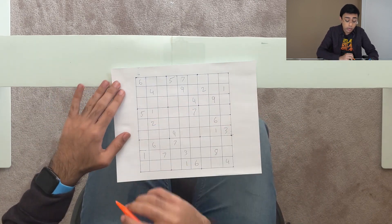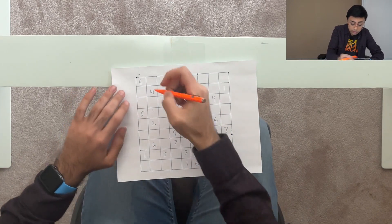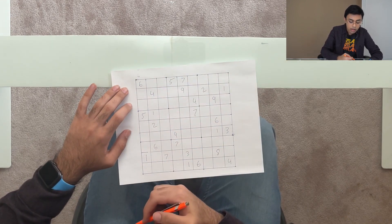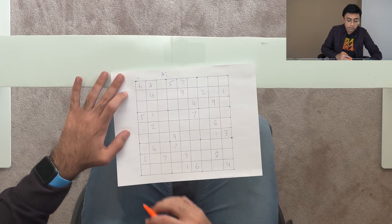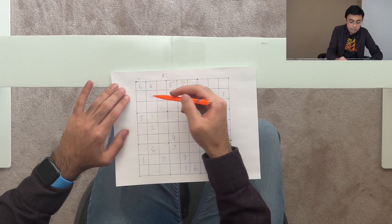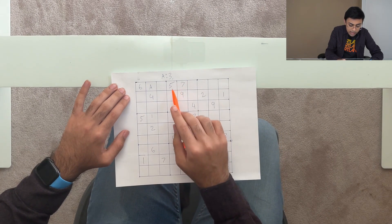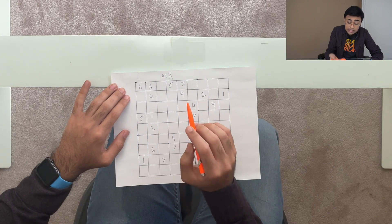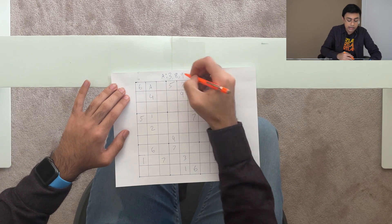Can we have the number 1? No. Number 2? No. Number 3? Yes — it's not within this 3x3 grid, its row, or its column. So let's call this tile A and note that for tile A we are allowed to have the number 3. What about 4? Not allowed. 5, 6, 7 — not allowed. But 8 and 9 are allowed. So the valid numbers for tile A are 3, 8, and 9.